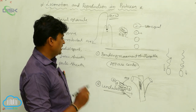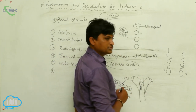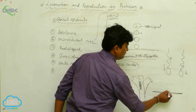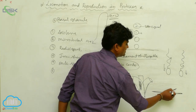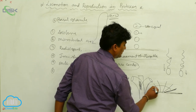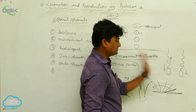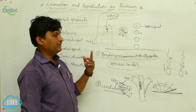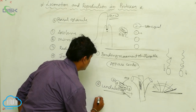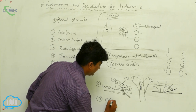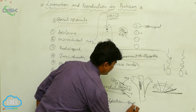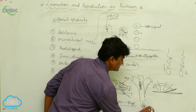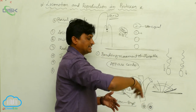We also consider the effective stroke and recovery stroke in the bending moment. The flagella first shows the effective stroke — a region-like formation involving beating — which causes the organism to move forward. Then it returns to the same position via the recovery stroke. The third type of movement is simple gyration, where the flagella moves like a screw, showing rotational gyration movement.